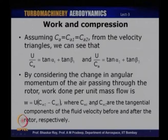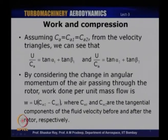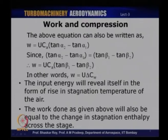Here Cw1 represents the tangential component of velocity at the inlet of the rotor and Cw2 at the exit. From the velocity triangle, we can also express these velocity components in terms of axial velocities: Cw2 equals Ca·tan α₂ and Cw1 equals Ca·tan α₁. So the work done is u·Ca·(tan α₂ − tan α₁). From the velocity triangle, tan α₂ − tan α₁ is also equal to tan β₁ − tan β₂. Therefore, work done equals u·Ca·(tan β₁ − tan β₂), which is also basically equal to u·delta Cw.